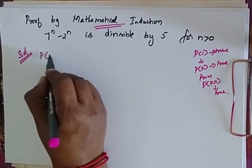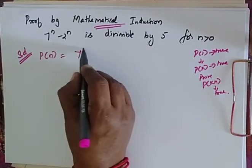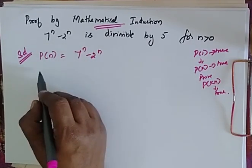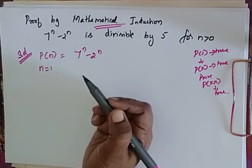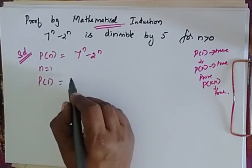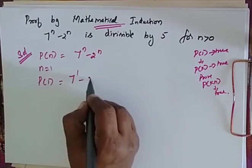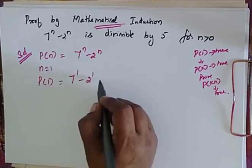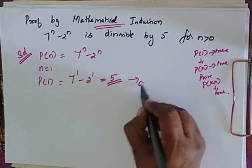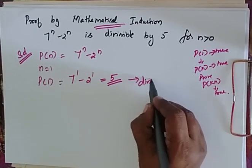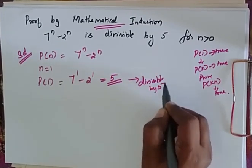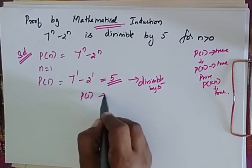I am considering my P(n) as 7^n minus 2^n. Now let n equal 1. So P(1) is equal to 7^1 minus 2^1, that is equal to 5. So surely it is a multiple of 5, so it is divisible by 5. So P(1) is true.